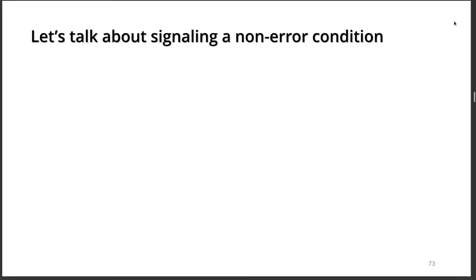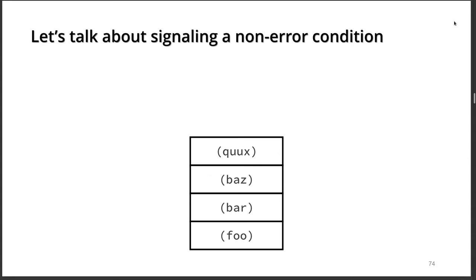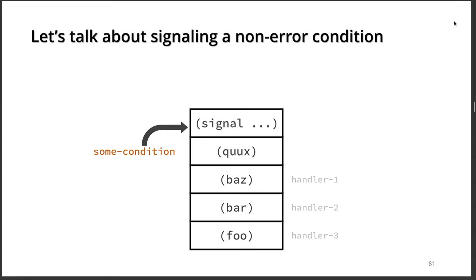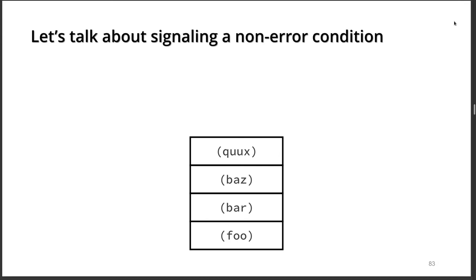Let's talk about the case that is not really possible with exceptions at all — signaling a condition that is not an error. If we have some code that signals some sort of condition that is not necessarily an error, we jump into the signal function. Just like before, handlers are found and called in order — the first, second, third handler, if the previous ones don't transfer control outside. After all handlers are exhausted, there is nothing left to do, so signal returns. It simply returns, since it is explicitly allowed to return, and execution continues from another point in the program.